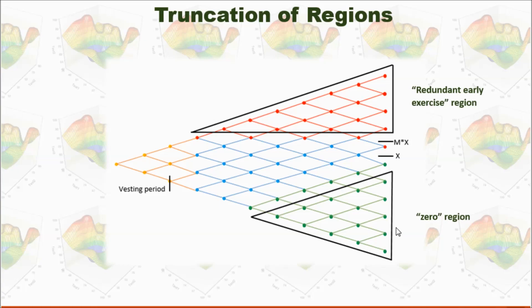Another region is called zero region within this triangle. That means if any nodes within this region, the value will be assigned to be zero because it will not have any attribution to the final price.